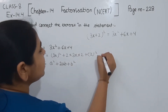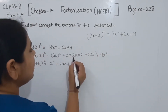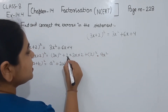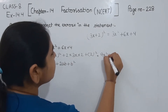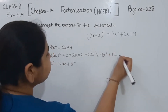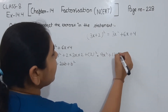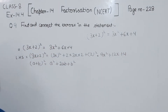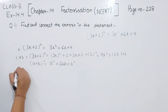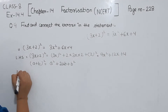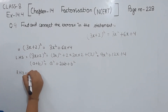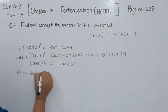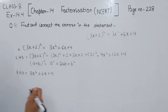Now we are going to solve this. 3 times 3 is 9, so 9x². Then 2 times 3 times 2 gives us 12x. And 2 squared is 4. So this gives us 9x² plus 12x plus 4. Now the right hand side is 3x² plus 6x plus 4.